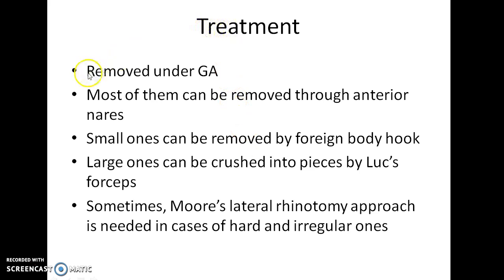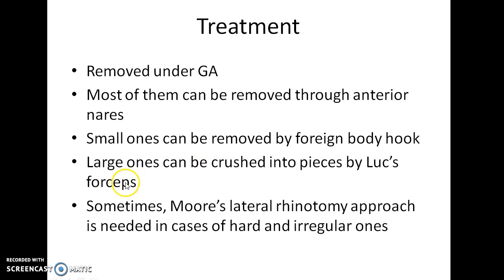How do you treat a case of rhinolith? Rhinoliths are removed under general anesthesia. Most of them can be removed through the anterior nares. Small rhinoliths can be removed by a foreign body hook. Large rhinoliths can be crushed into pieces by Luc's forceps and then removed. Sometimes Moore's lateral rhinotomy approach is needed in cases of hard and irregular rhinoliths.